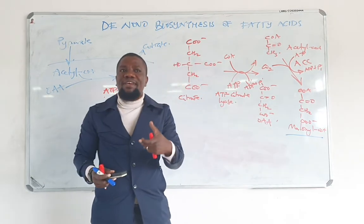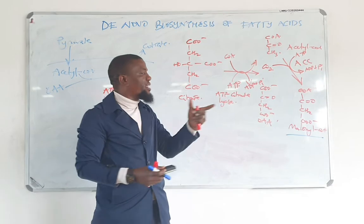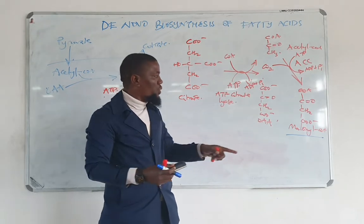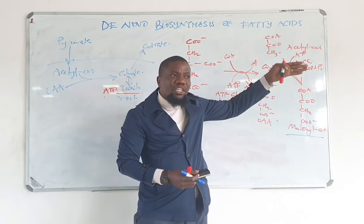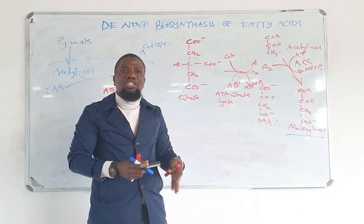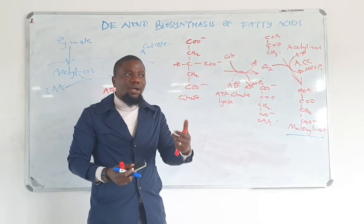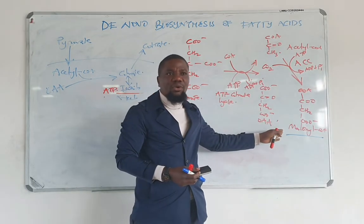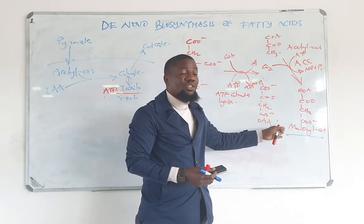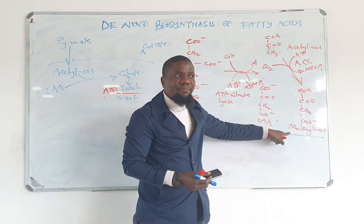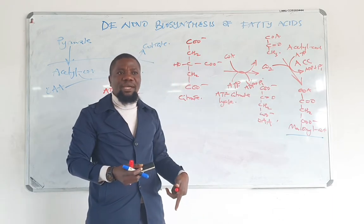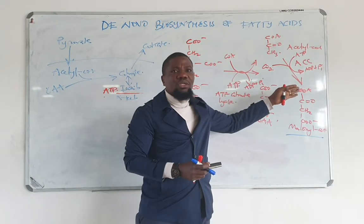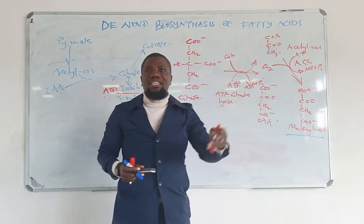Malonyl-CoA prevents the rate-limiting reaction of breakdown of fatty acids — what we call beta-oxidation. It binds to the enzyme carnitine acyltransferase-1, which transports fatty acids into the mitochondria. This is the rate-limiting step for beta-oxidation. When Malonyl-CoA binds that enzyme, fatty acids cannot enter the mitochondria for breakdown. This means that when you make fatty acids, they will be stored, not broken down immediately after synthesis.